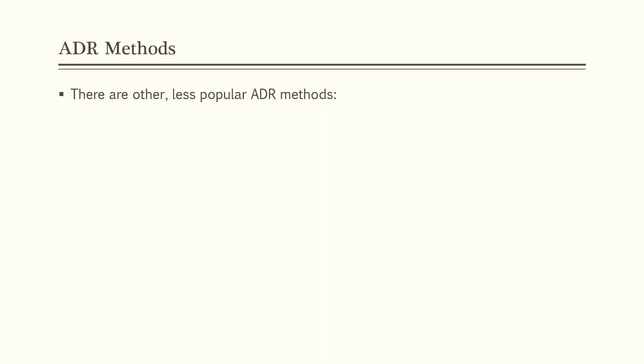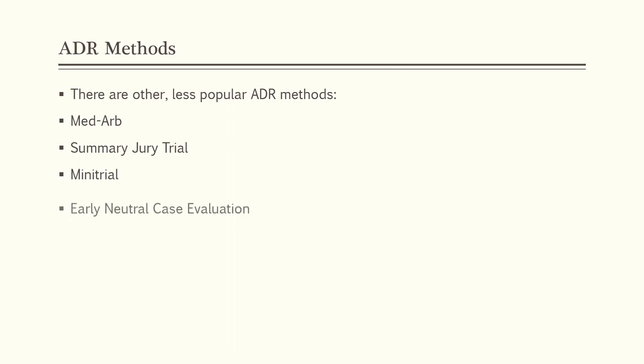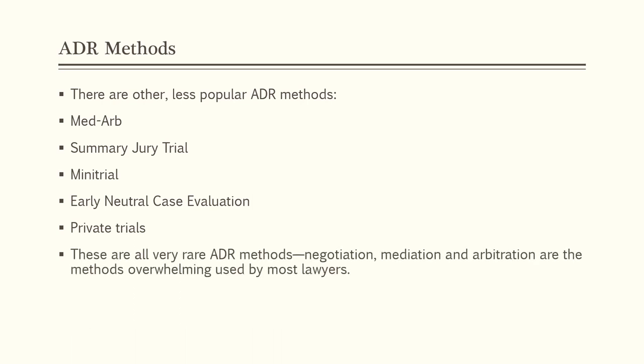There are other less popular alternative dispute resolution methods: med-arb, summary jury trial, mini trials, early neutral case evaluation, and private trials. These are all very rare ADR methods — I've never done any of them in nearly 30 years of practice. The only things lawyers generally look to when considering ADR are the big three: early negotiation, mediation, and arbitration. Most of these other types of ADR come up only in very specific cases like class actions or specialty cases like patent cases. That concludes Part 2 of Chapter 3.